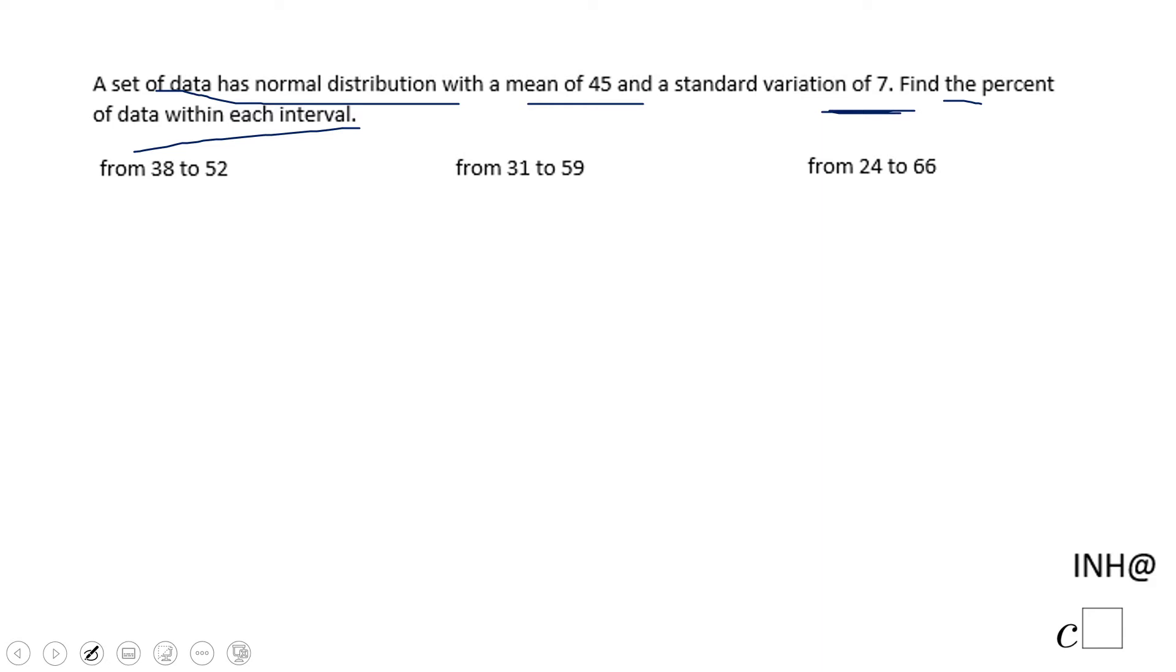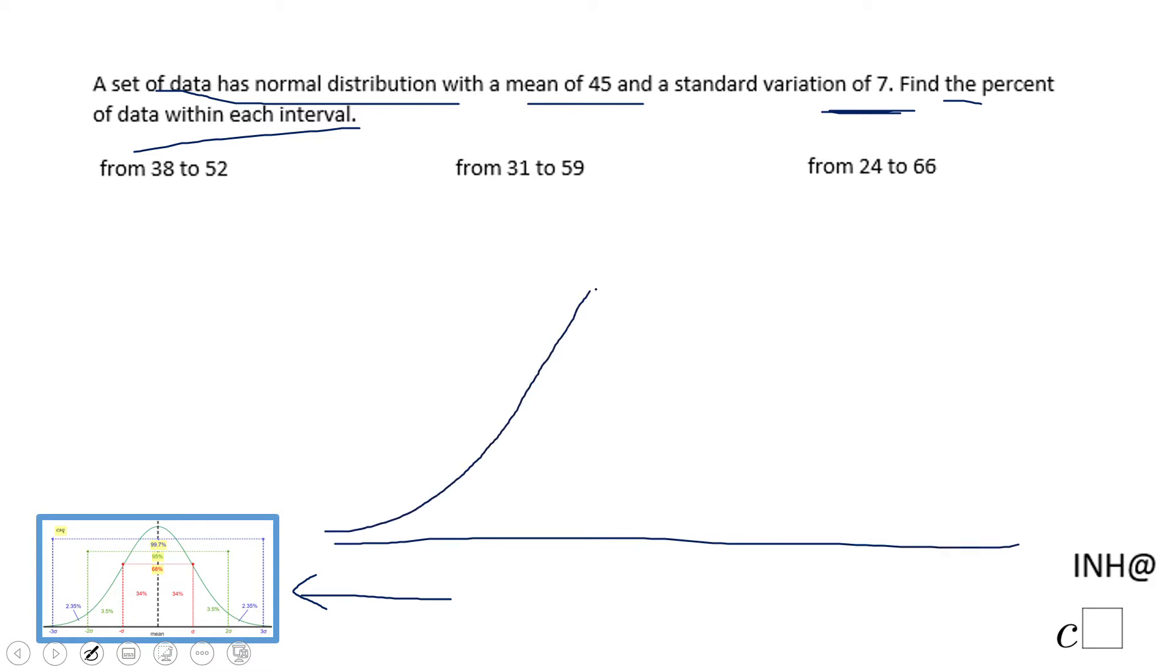For doing this, first of all we're going to have to get a curve like this, a normal distribution. So I'm going to make a bell curve and right here in the middle I'm going to put 45, and then I'm going to add 7, I'm going to get 52. I'm going to add 7 more, 59. I'm going to add 7 more, I'm going to get 66.